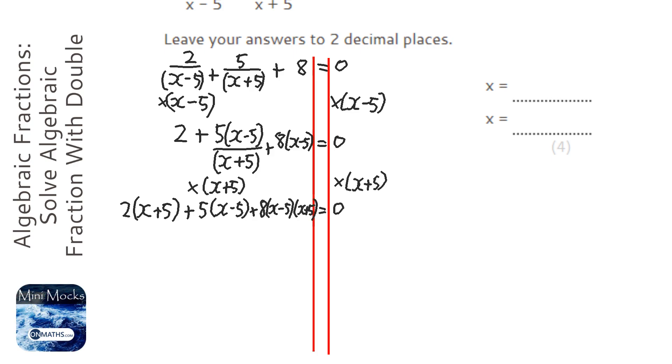Now we need to expand these. So 2 times x is 2x plus 10, plus, this would be 5x minus 25. Now this is actually a difference of two squares here, so I'm just going to leave it as 8 brackets.